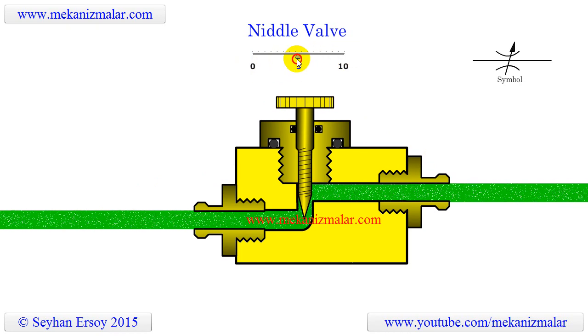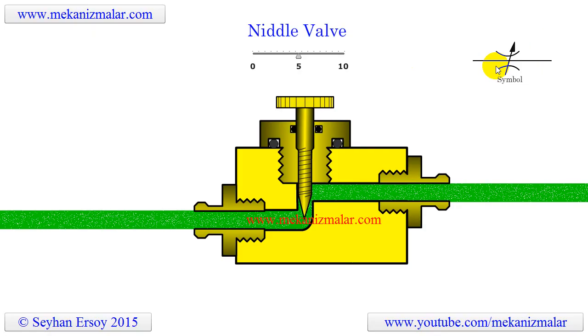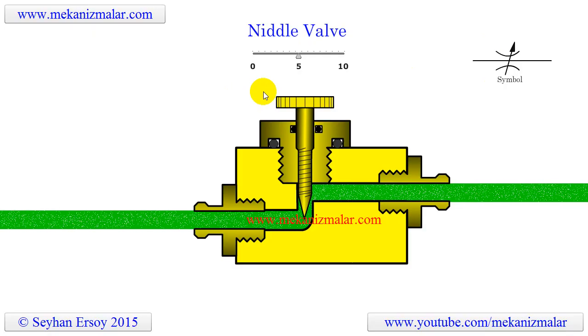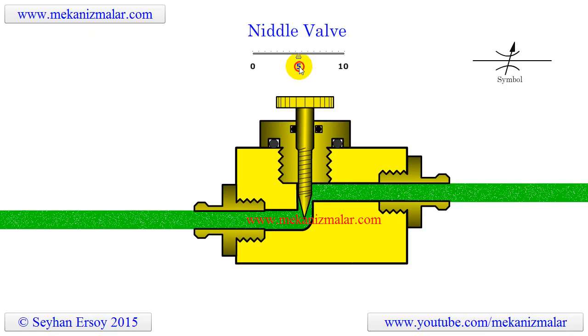Also shown here is a circuit symbol of a needle valve. Notice how the flow rate in the tubing varies depending on the position of the needle.